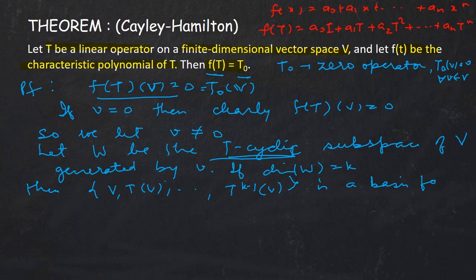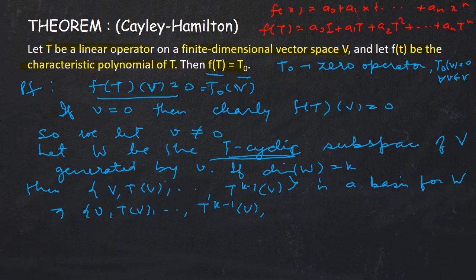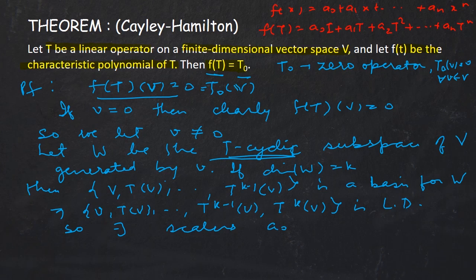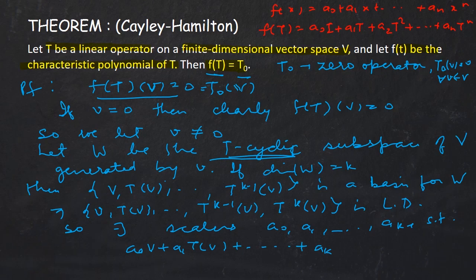If we adjoin any vector to this basis set it becomes linearly dependent. So the set {v, Tv, …, T^(k−1)v, T^k v} is linearly dependent. Therefore there exist scalars a₀, a₁, …, a_(k−1) such that a₀v + a₁(Tv) + … + a_(k−1)(T^(k−1)v) + T^k v = 0.